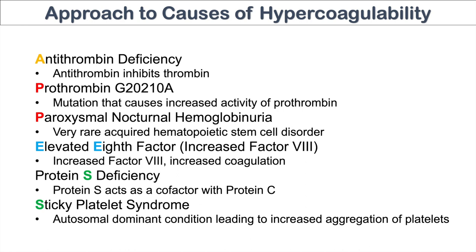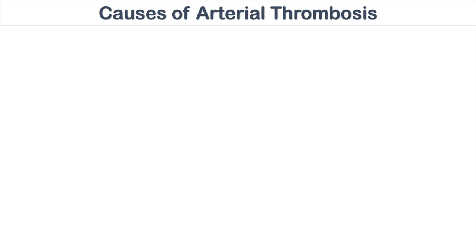Most of these causes induce clots in the veins, but there are certain conditions that cause both arterial and venous thrombi. So which conditions cause arterial clots? There are only a handful of conditions to think about when there are clots in arteries.